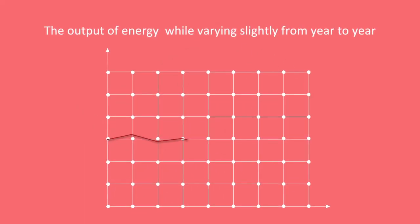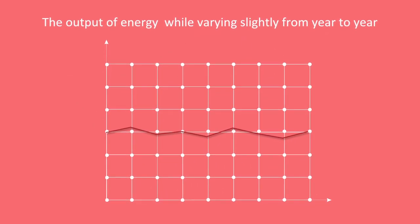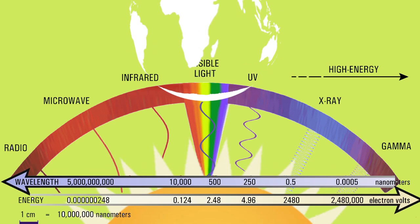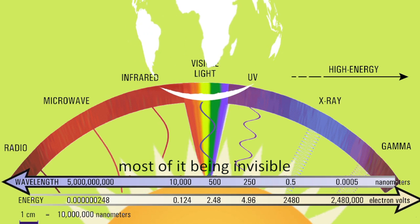The output of energy, while varying slightly from year to year, is fairly constant. This energy takes a long time to work its way up to the sun's surface. Once it escapes, it travels in the form of many wavelengths of energy, most of it being invisible to our eyes.